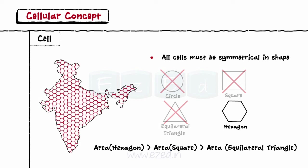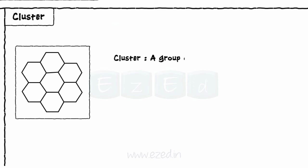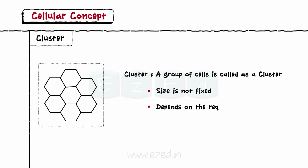The next concept is a cluster. A group of cells is called a cluster. The cluster size is not fixed; it depends on the requirements of the area.